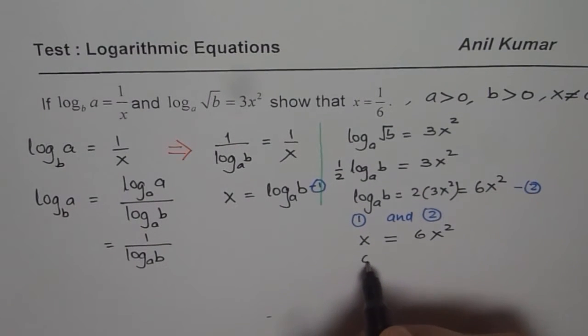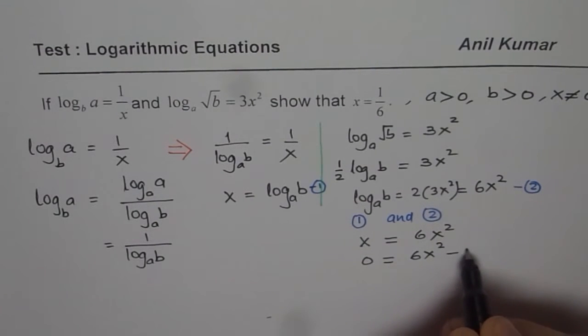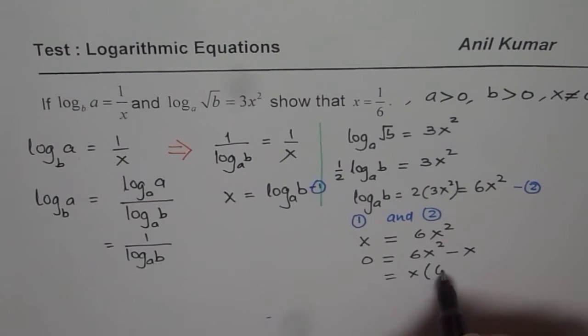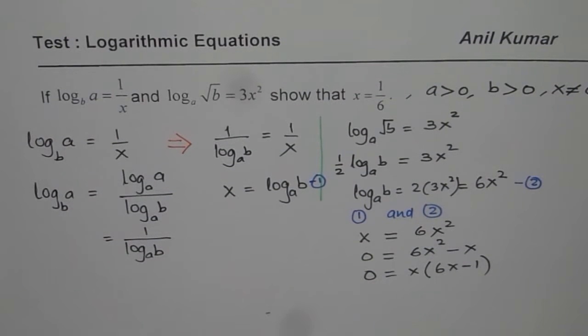Taking x to the right side, I get 0 equals 6x square minus x. Now I can factor x. So when I factor x, I get 6x minus 1 equals 0. So that is the equation which you need to solve.